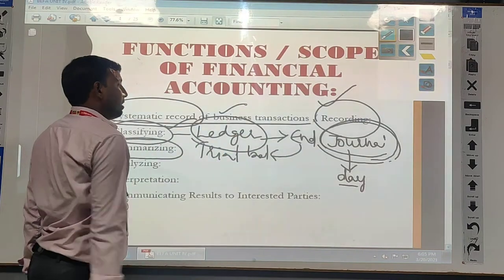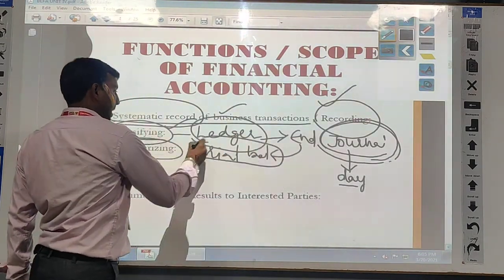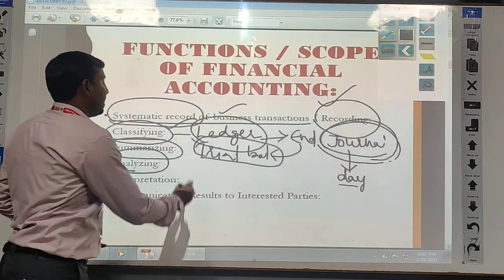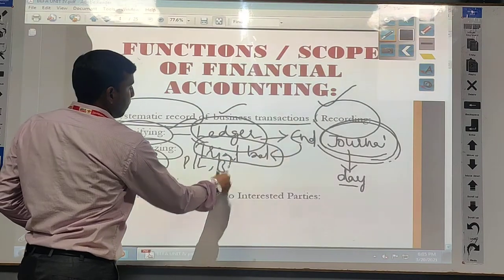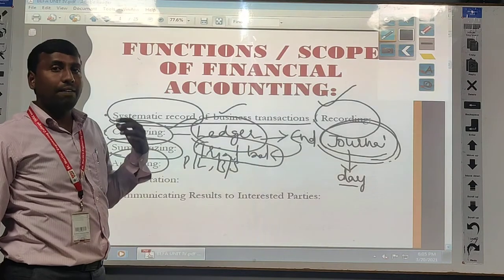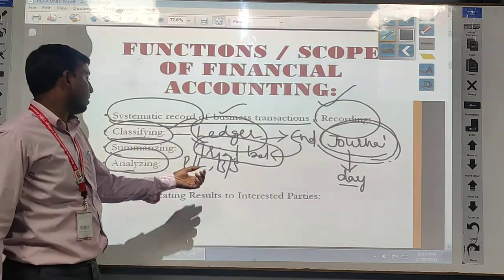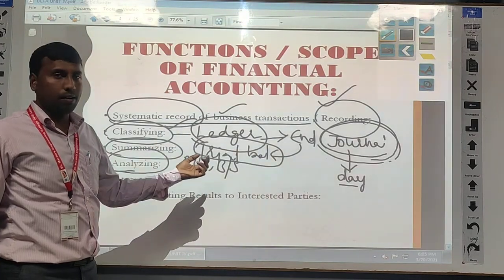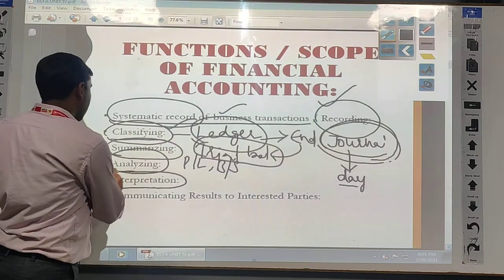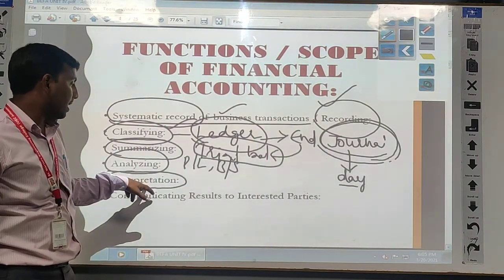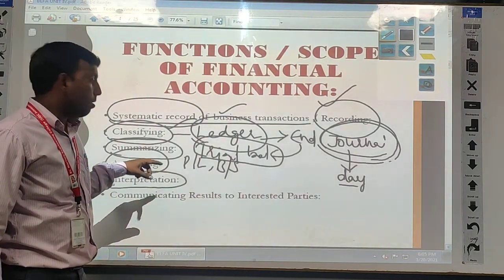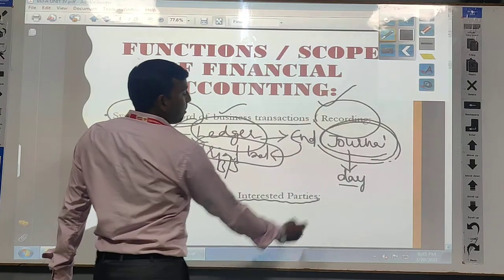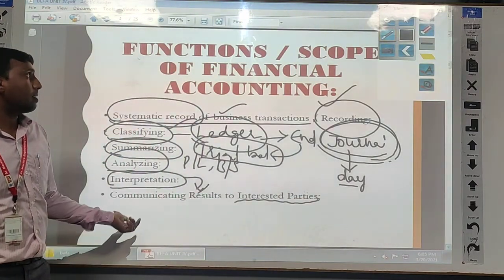All the end balances of the ledger we have to enter in the trial balance. After completion of the trial balance, we go for the next step — that is called as analyzing. By using this trial balance, we are finding the results — either we are getting a profit or loss, and what is the balance sheet of the particular business — how many assets are there, how many liabilities are there. And after finding the profit and loss and the financial position of the company, we have to interpret the results and communicate them to the required parties. These are the functions of accounting.